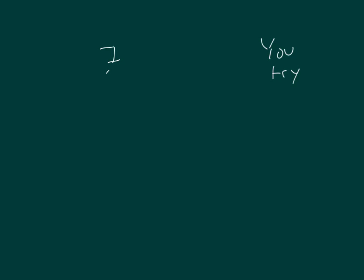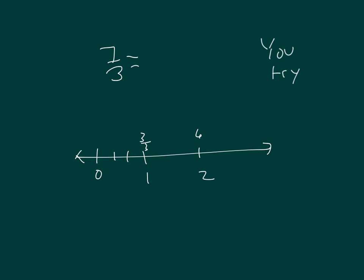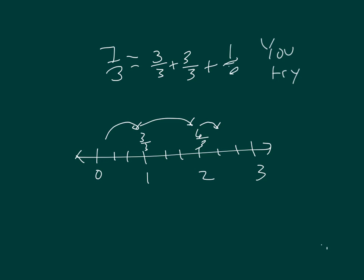Can you rewrite 7 thirds as a whole and a fractional part? Here's 0, here's 1, here's 2. 1 is also equal to 3 thirds, and 2 is equal to 6 thirds. So 3 thirds, plus another 3 thirds, and then 1 third. So 7 thirds is equal to 3 thirds plus 3 thirds plus 1 third, which also equals 2 and 1 third.